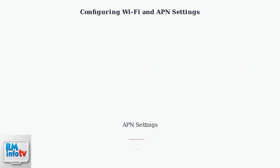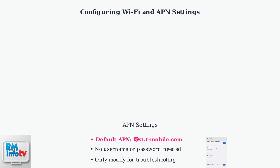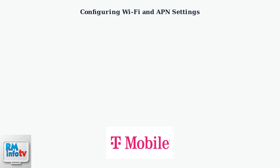For APN settings that manage cellular data routing, the default is fast.tmobile.com with no username or password required. Only modify these for troubleshooting or roaming, as incorrect settings can disrupt your connection. Advanced settings include VLANs for isolating devices and QoS for prioritizing network traffic to optimize performance.